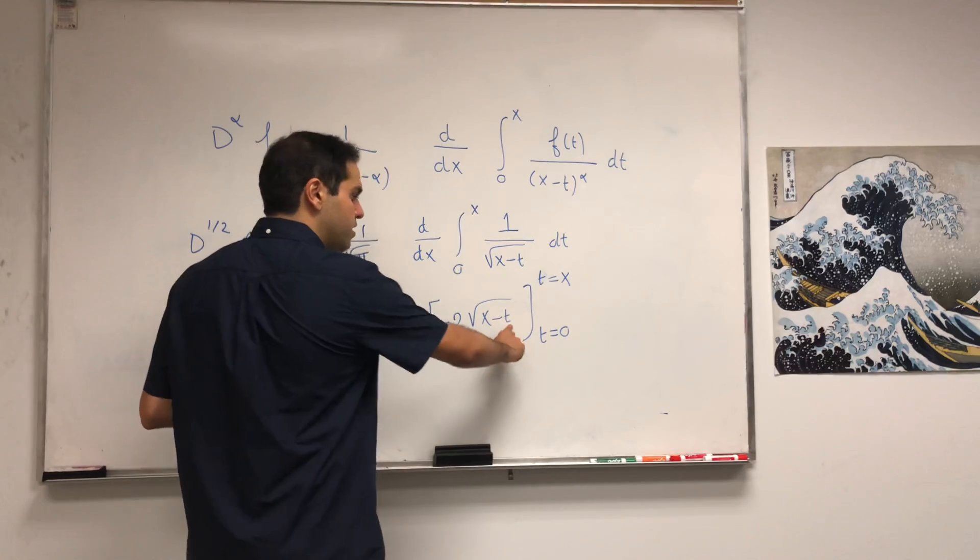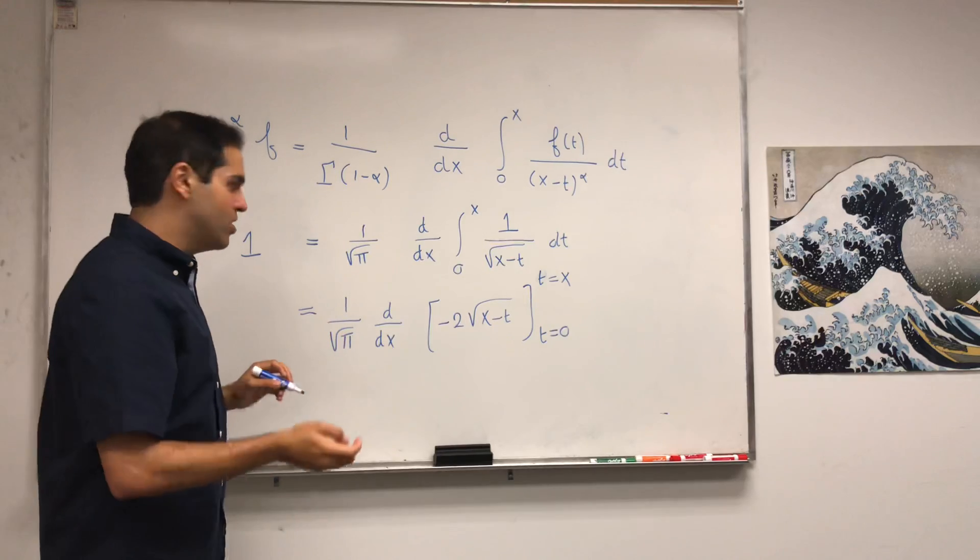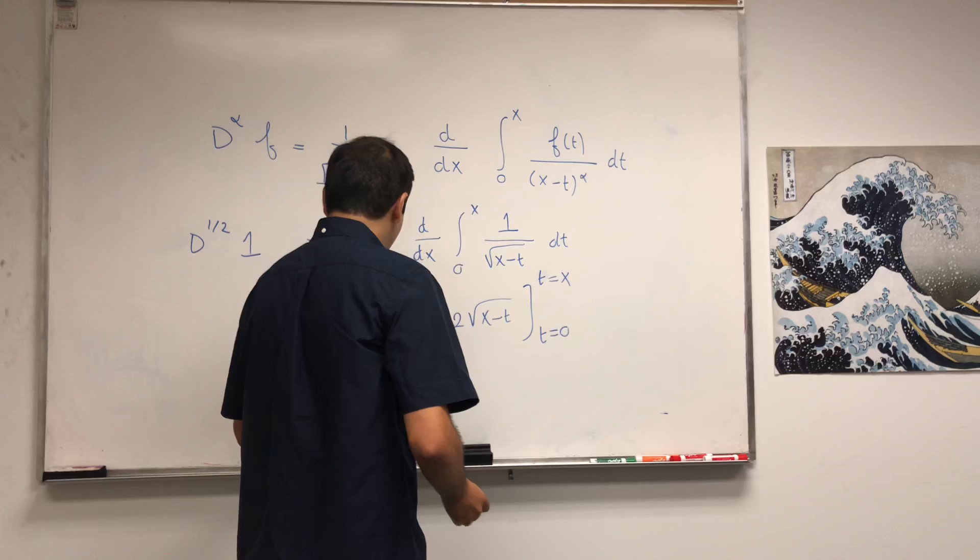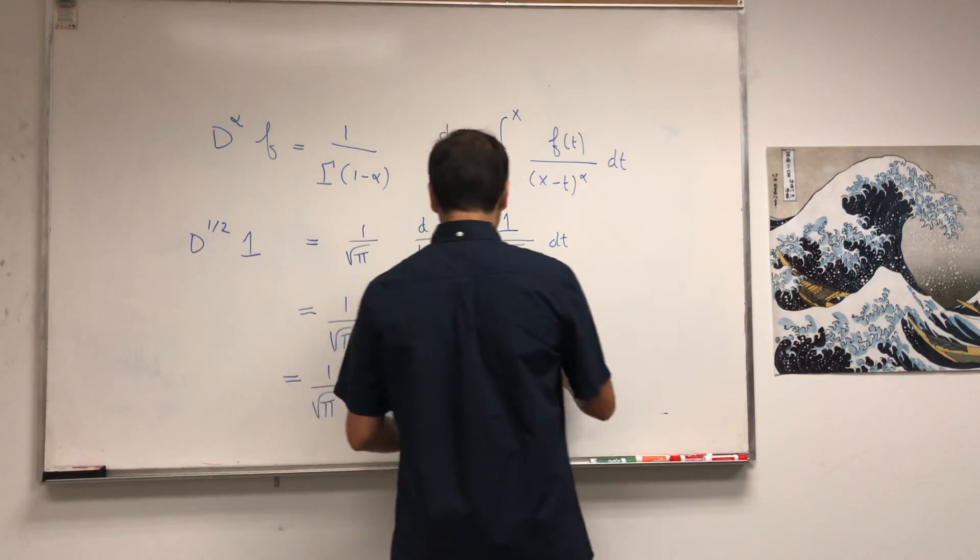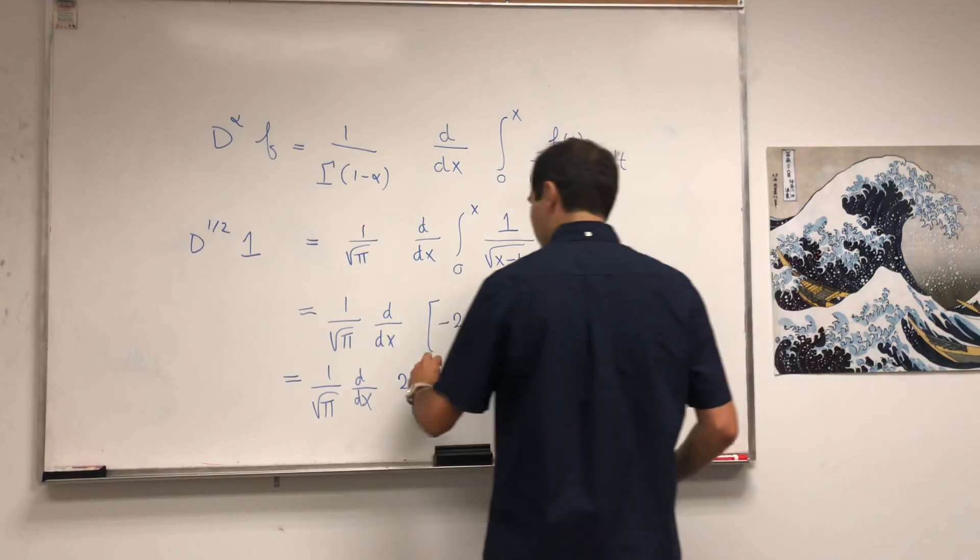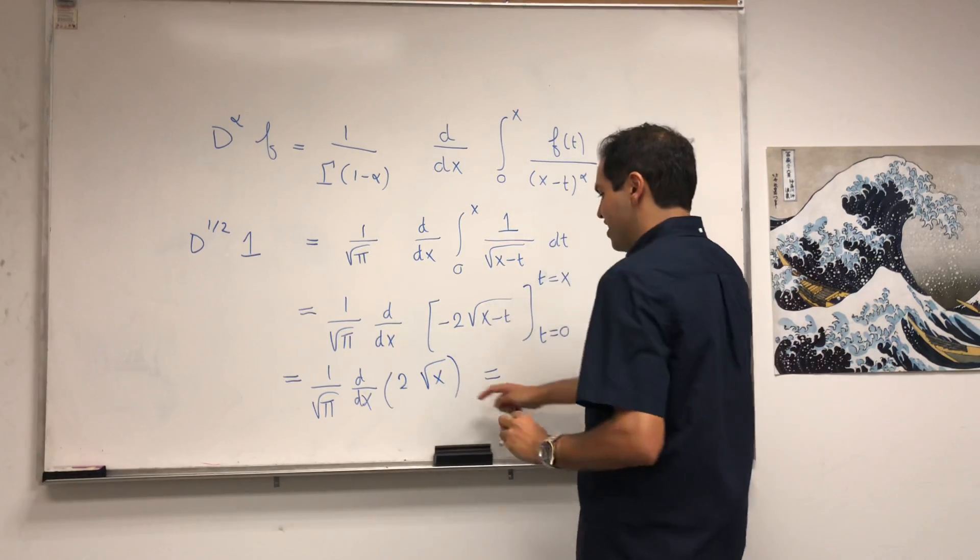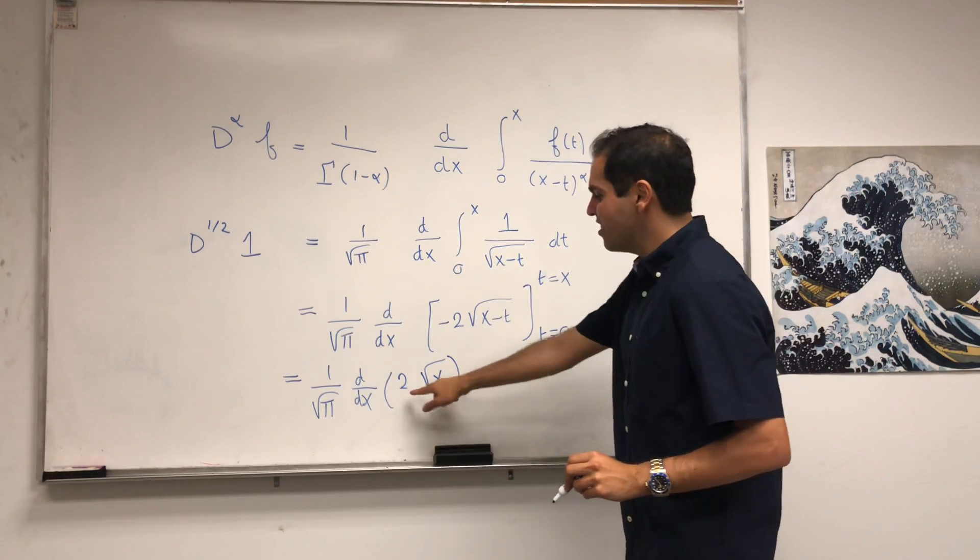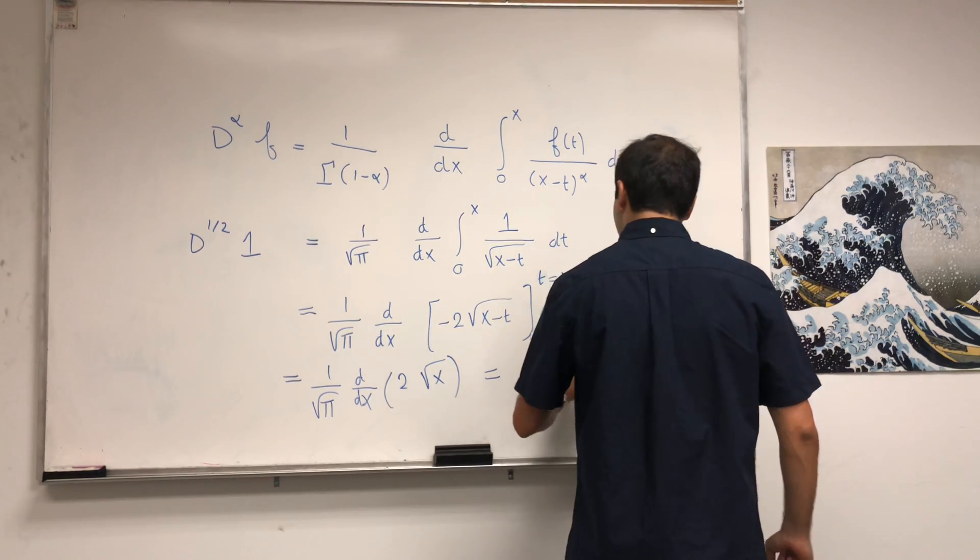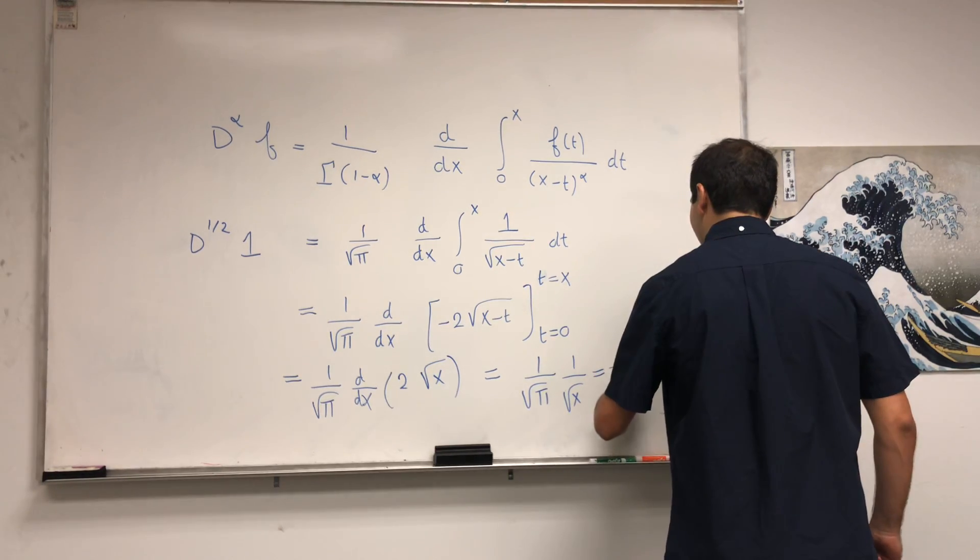All right, the nice thing is if you plug in t equals x here, you get x minus x which gives you 0. So what you're really left with is 1 over pi, d/dx of 2 square root of x. If you differentiate that, this becomes 1/(2 sqrt(x)) times 2, which becomes 1 over square root of pi x.